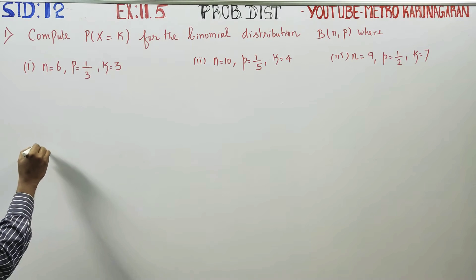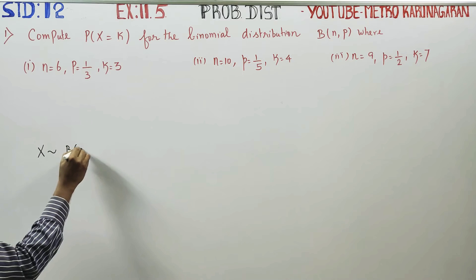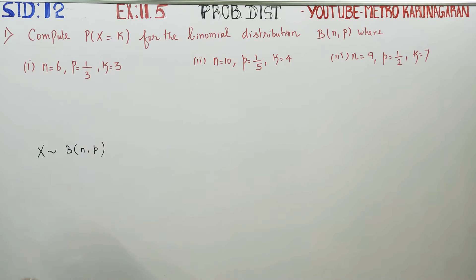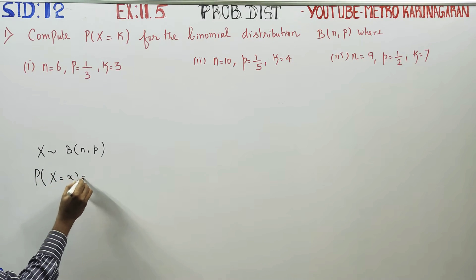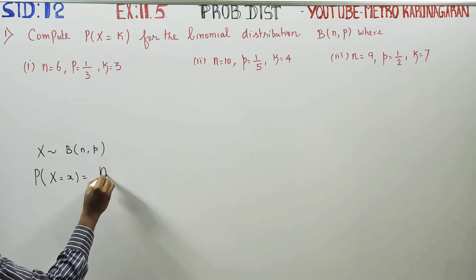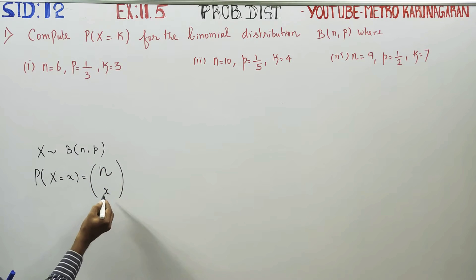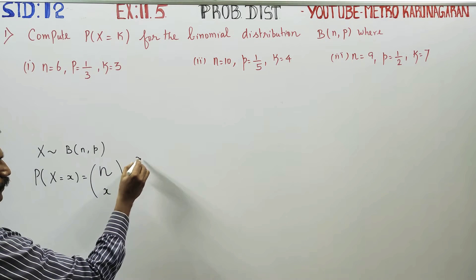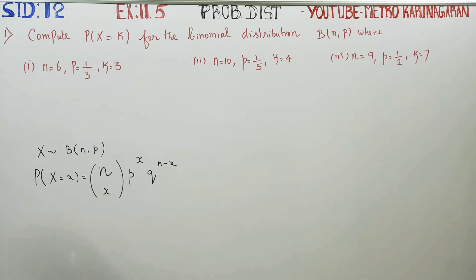x follows binomial distribution B(n, p). The probability formula P(X = x) = nCx * p^x * q^(n-x). This combination nCx times p power x times q power n minus x is the binomial distribution formula.